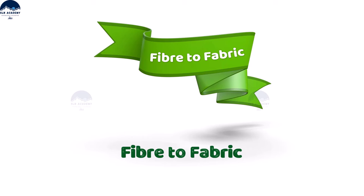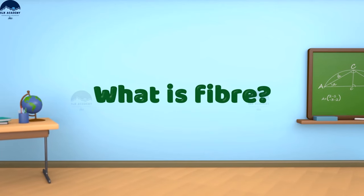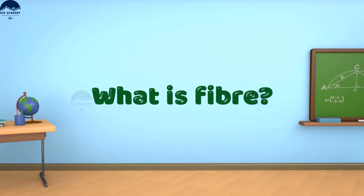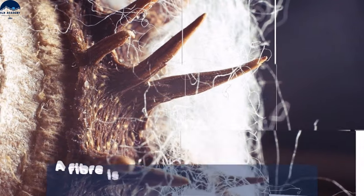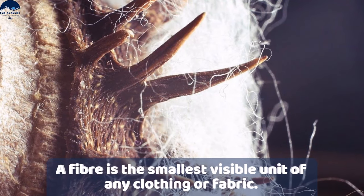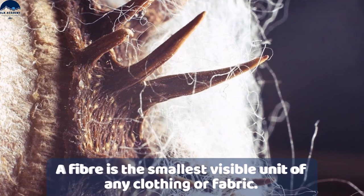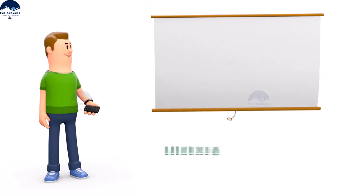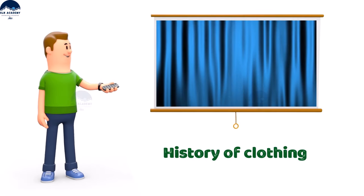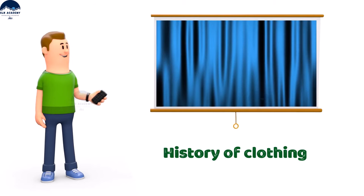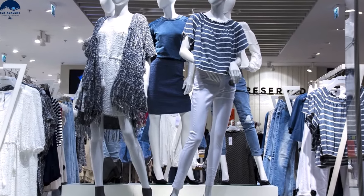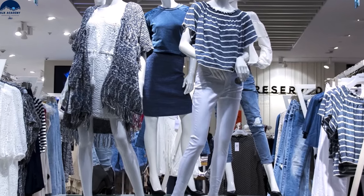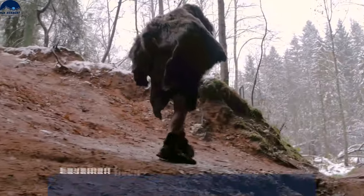Fiber to fabric: what is fiber? Fiber is the smallest visible unit of any clothing or fabric. The history of clothing: the wearing of clothing is exclusively a human characteristic and is a feature of most human societies.